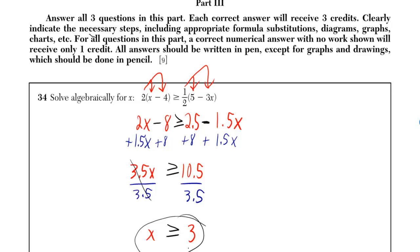The first thing I did right there is I distributed. I did the 2 times the x, gave me 2x, and 2 times 4 gave me 8, and there was a minus sign in between, so I kept that. So 2x minus 8. 1 half times 5, 2.5. 1 half times 3x, 1.5x. Keep the minus sign.